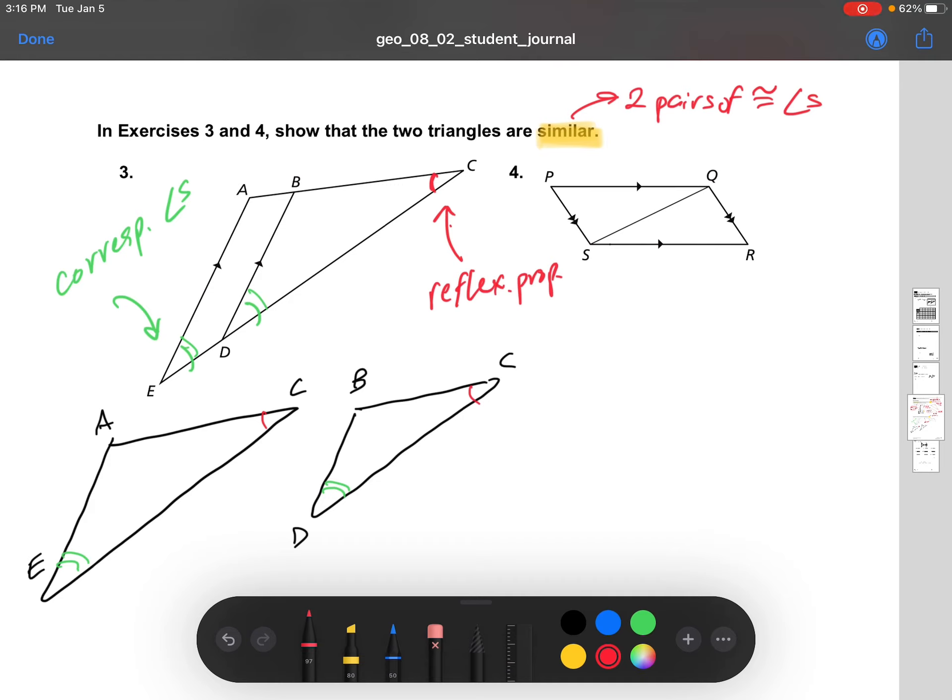All right, so the reasoning is corresponding angles and reflexive property. Let's turn our attention to number four. So in this diagram, we've got multiple sets of parallel lines. Let's take a look at the first set of parallel lines.